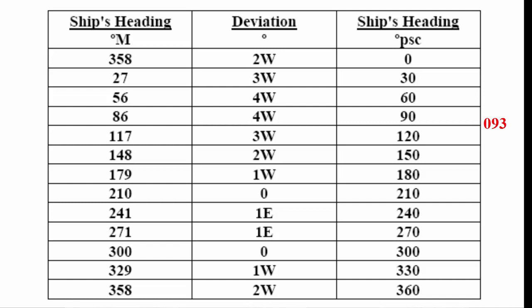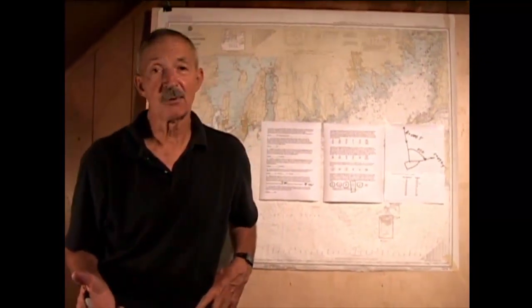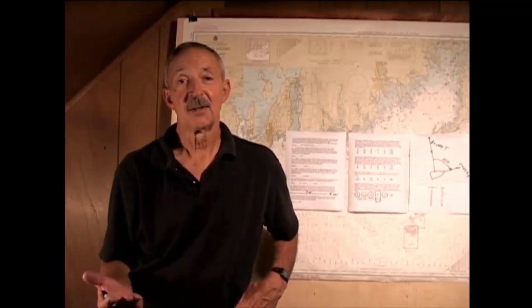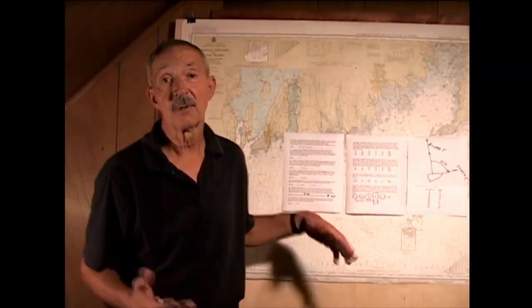The deviation table says that for a heading of 093, or roughly 90 degrees, the deviation is 4 west. So the question was: what is the deviation based on the observation — that's 7 west — and what is the deviation per the table — that's 4 west. That means that the deviation table, based on this observation and assuming the observation is accurate, is in error for that heading. We got 7 degrees west by observation, 4 degrees in the table, and that's the difference between those.